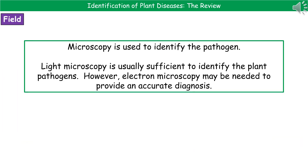The second option available to us in the field is light microscopy to identify the pathogen. In most cases the light microscope is sufficient, but sometimes to provide an accurate diagnosis of which pathogen we have, we may need to step up to use the electron microscope — which obviously isn't something you can do out in a field, because as we looked at back in B1, light microscopes are portable, but electron microscopes not so much.